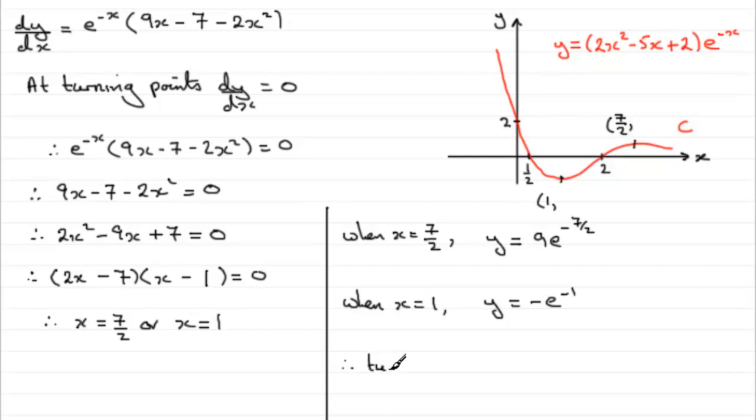So in answer to the question then, we've therefore got that the turning points, always a good idea just have a summary at the end, turning points then are going to be at the points (7/2, 9e^(-7/2)). And then we've got the other one which is x is 1 and minus e^(-1). Or you could write that I suppose as minus 1/e.